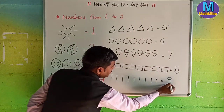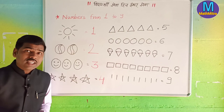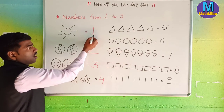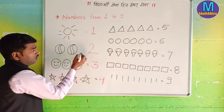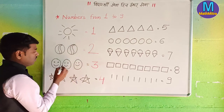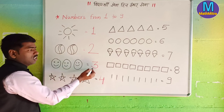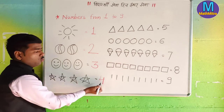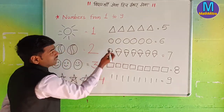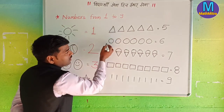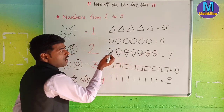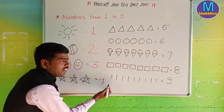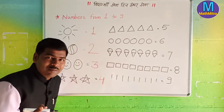Now friend, once again see with me — here is one star, here are two balls, here are three smileys, one two three four — four stars, five triangles, six circles, seven ice creams, eight rectangles, and nine standing lines. Are you getting me?